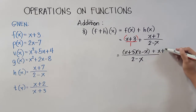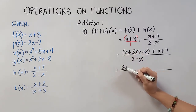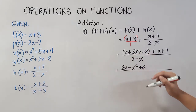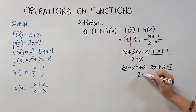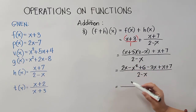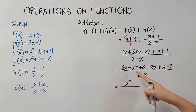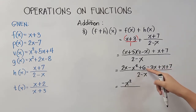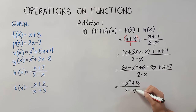We now apply the FOIL method to (x + 3)(2 − x): x × 2 = 2x, x × (−x) = −x², 3 × 2 = 6, 3 × (−x) = −3x. Then we copy plus (x + 7), all over (2 − x). Looking for like terms: −x² stands alone. For x terms: 2x − 3x + x = 0, so we drop those. Finally 6 + 7 = 13. Our final answer is (−x² + 13) / (2 − x).